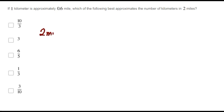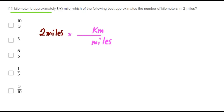In order to convert two miles into kilometers, we need to multiply two miles by kilometers over miles. Remember that one kilometer is equivalent to 0.6 miles.